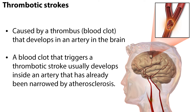Ischemic strokes can be further divided into two groups: thrombotic strokes and embolic strokes. Thrombotic strokes are caused by a thrombus or blood clot that develops in an artery in the brain. Often, a blood clot that triggers a thrombotic stroke develops inside an artery that has already been narrowed by atherosclerosis.